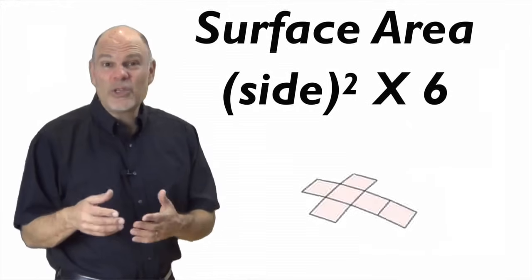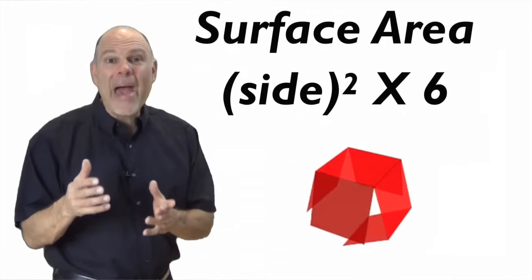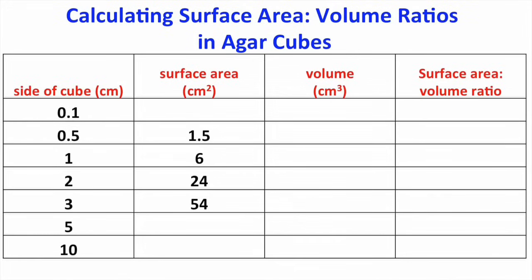The vinegar is diffusing through the outer surface of each cube, and we can quantify the amount of surface by measuring the surface area of each cube. In this table, I'm going to list the surface area for each of the four cubes, plus three imaginary ones. One smaller, 0.1 centimeters on a side, and two bigger, 5 centimeters on a side, and 10 centimeters on a side.